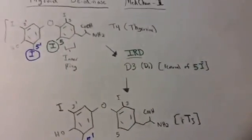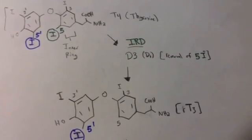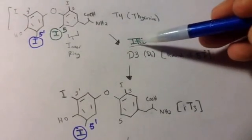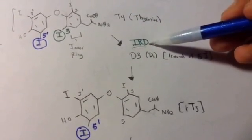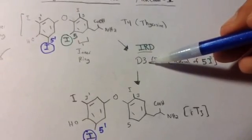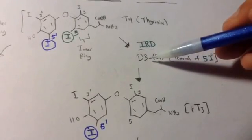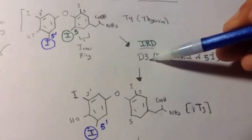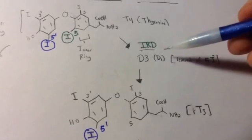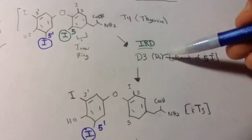So first, let's start out with if we have an inner ring deiodinase first. IRD stands for inner ring deiodinase. And the actual enzyme, I'm not going to give you the name because this is just how it's listed in the notes, but D3 is the main enzyme. D1 is also used, but to a lesser extent.